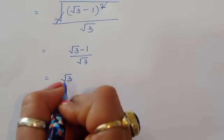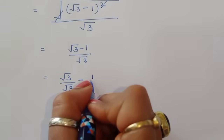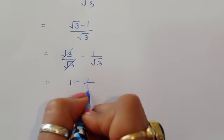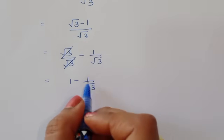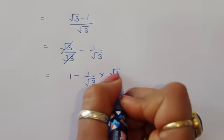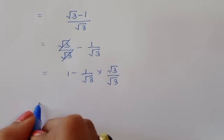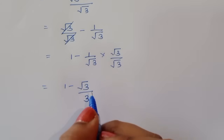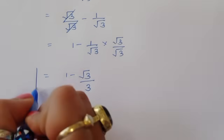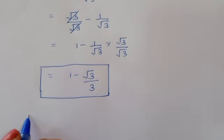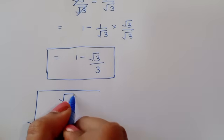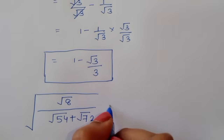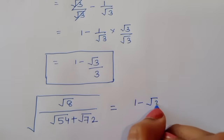We separate the terms: square root of 3 divided by square root of 3 minus 1 divided by square root of 3. Rationalizing the second term by multiplying numerator and denominator by square root of 3, we get 1 minus square root of 3 divided by 3. So the final answer is: square root of (8 divided by (square root of 54 plus square root of 72)) equals 1 minus square root of 3 divided by 3.